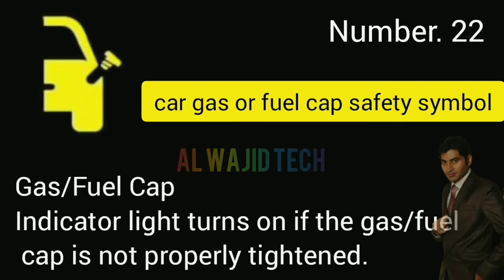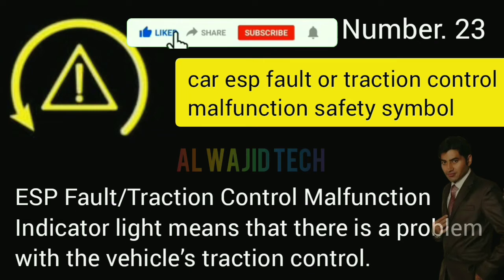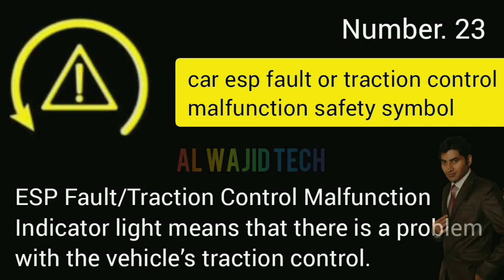Number twenty-two: Car gas or fuel cap. The gas/fuel cap indicator turns on if the gas or fuel cap is not properly tightened. Number twenty-three: Car ESP fault or traction control malfunction. The ESP fault/traction control malfunction indicator means that there is a problem with the vehicle's traction control.